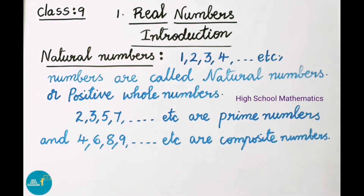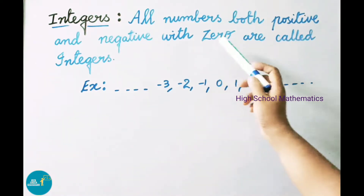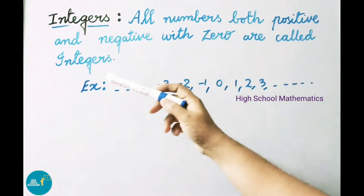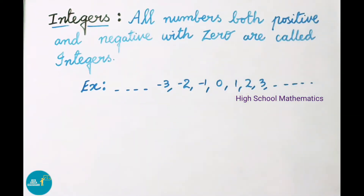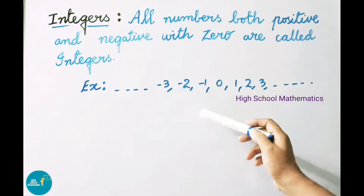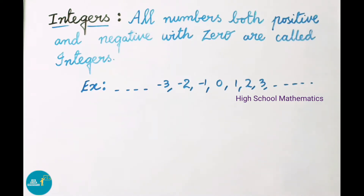Next we shall see the definition for integers. All numbers, both positive and negative numbers with 0, are called as integers. Example: minus 3, minus 2, minus 1, 0, 1, 2, 3, and so on. Integers are denoted with the capital letter Z.